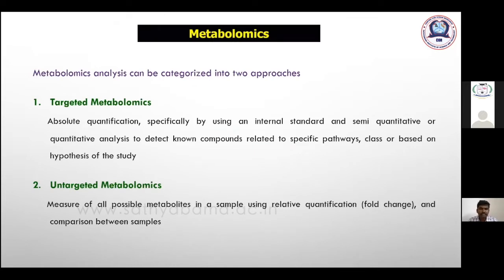First, what is metabolomics? Metabolomics is the study of metabolites present in tissue, animal, cells, or whatever it may be. Based on that, metabolomics analysis is characterized into two types: one is targeted metabolomics and another one is untargeted metabolomics.